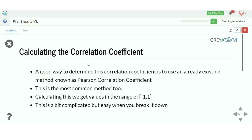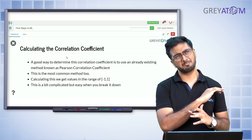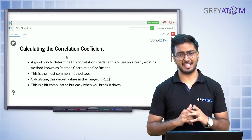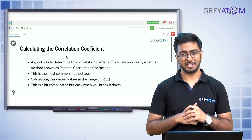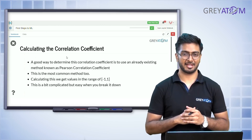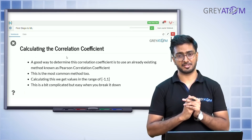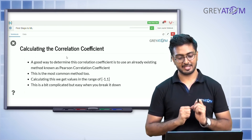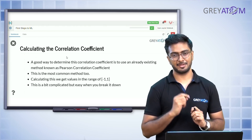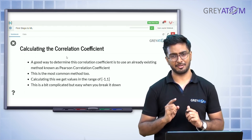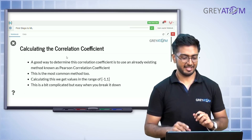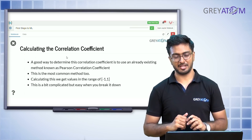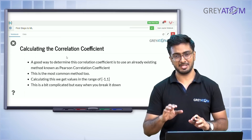A good way to determine this is using the Pearson correlation coefficient. If your values are continuous variables, you can directly use the Pearson correlation coefficient. For categorical data, you would use Spearman's rank correlation — but that's for another day. Here we'll focus on Pearson's, which measures correlation between continuous variables.